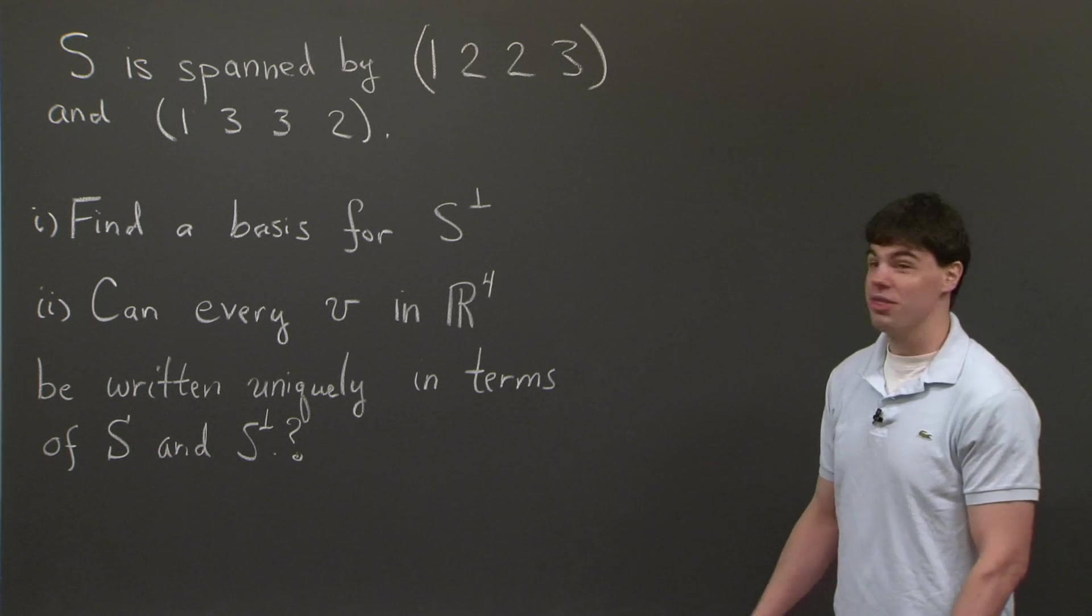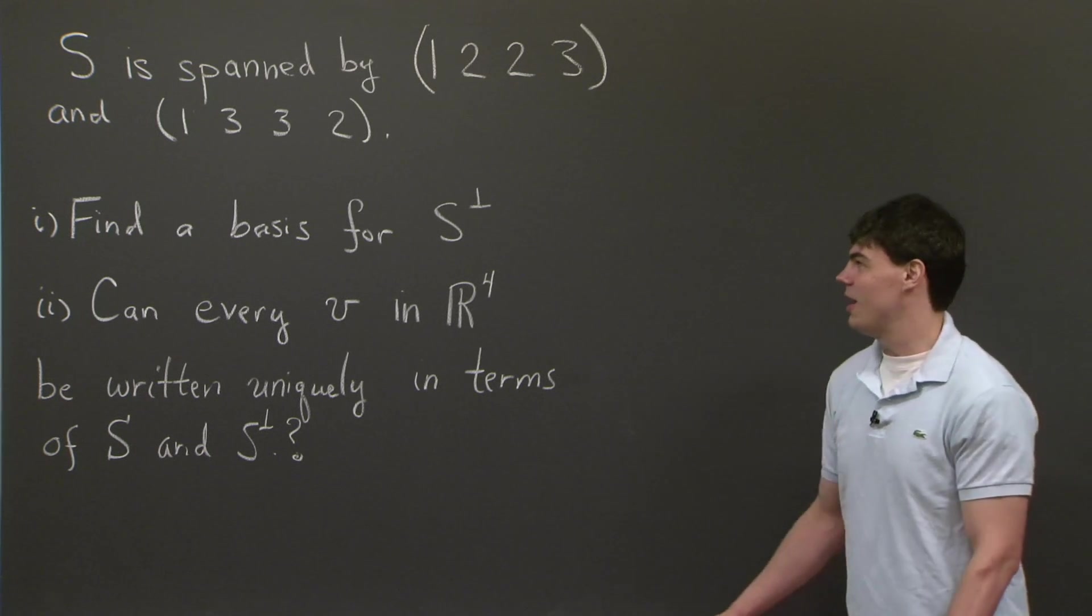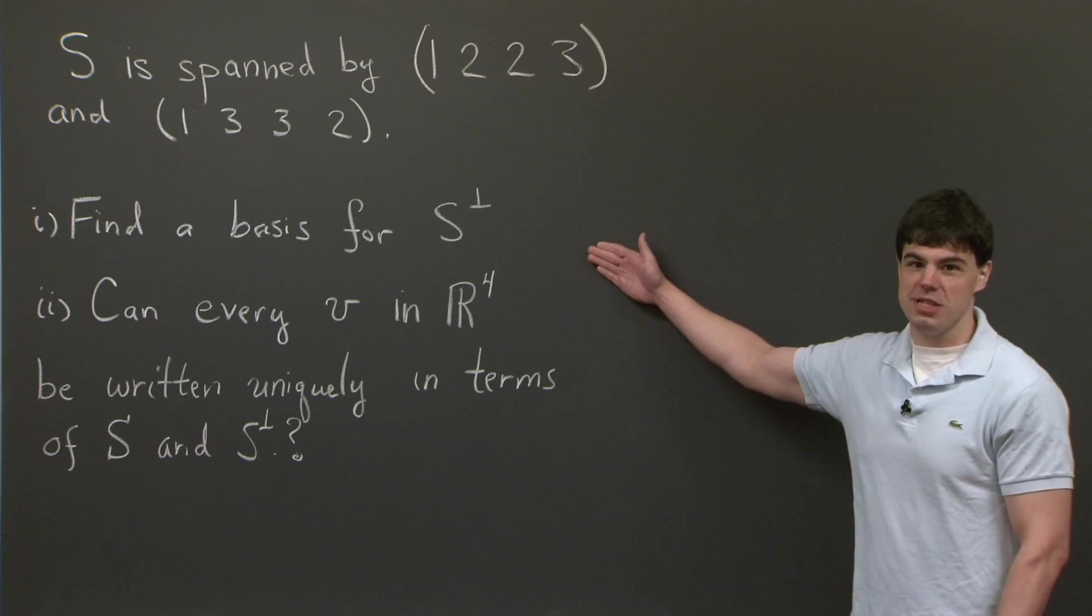and suppose S is spanned by two vectors, (1, 2, 2, 3) and (1, 3, 3, 2), we have a question here, which is to find a basis for S perp,